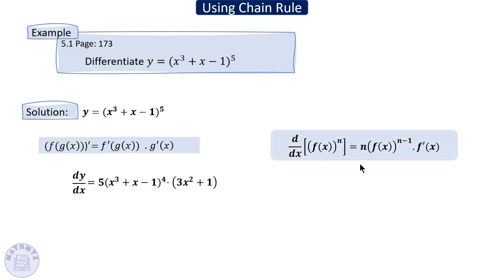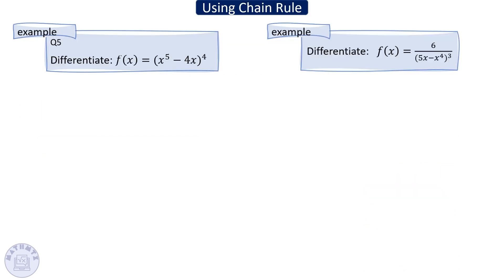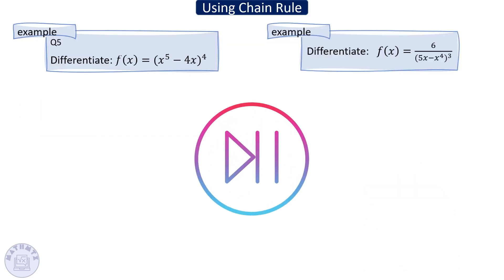Here's the result: whenever you have a function raised to a power, drag the power down, keep the function as-is to the same power minus one, then multiply by the derivative of what's inside. Pause the video, try to solve these two questions, then come back to check your answer.